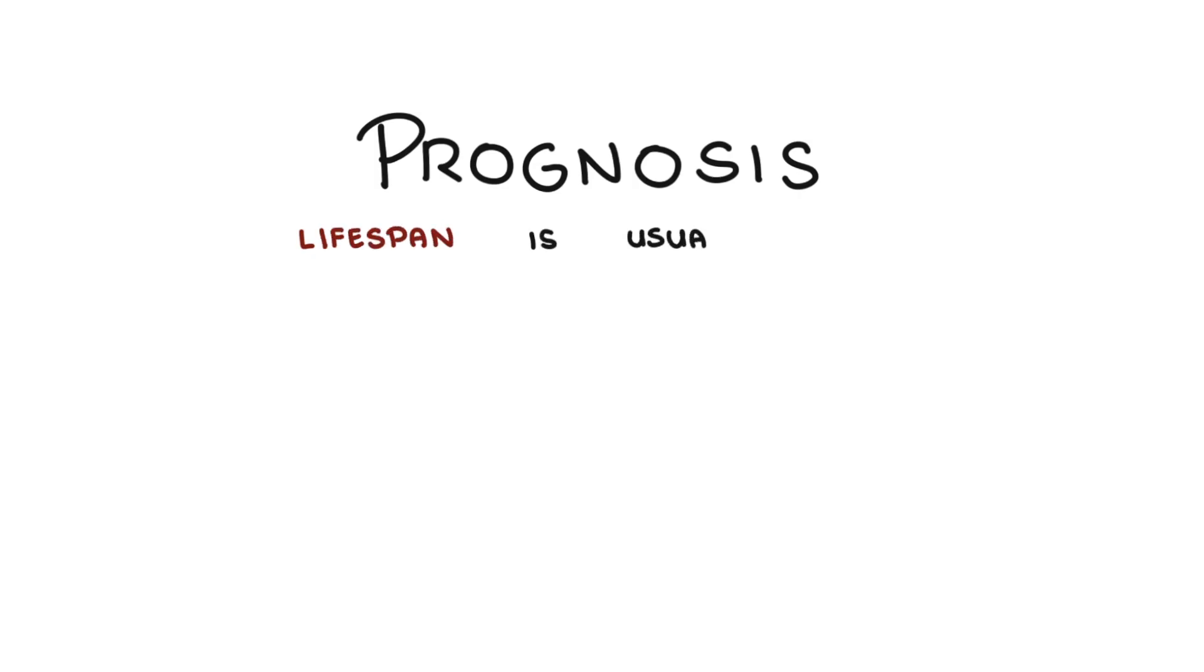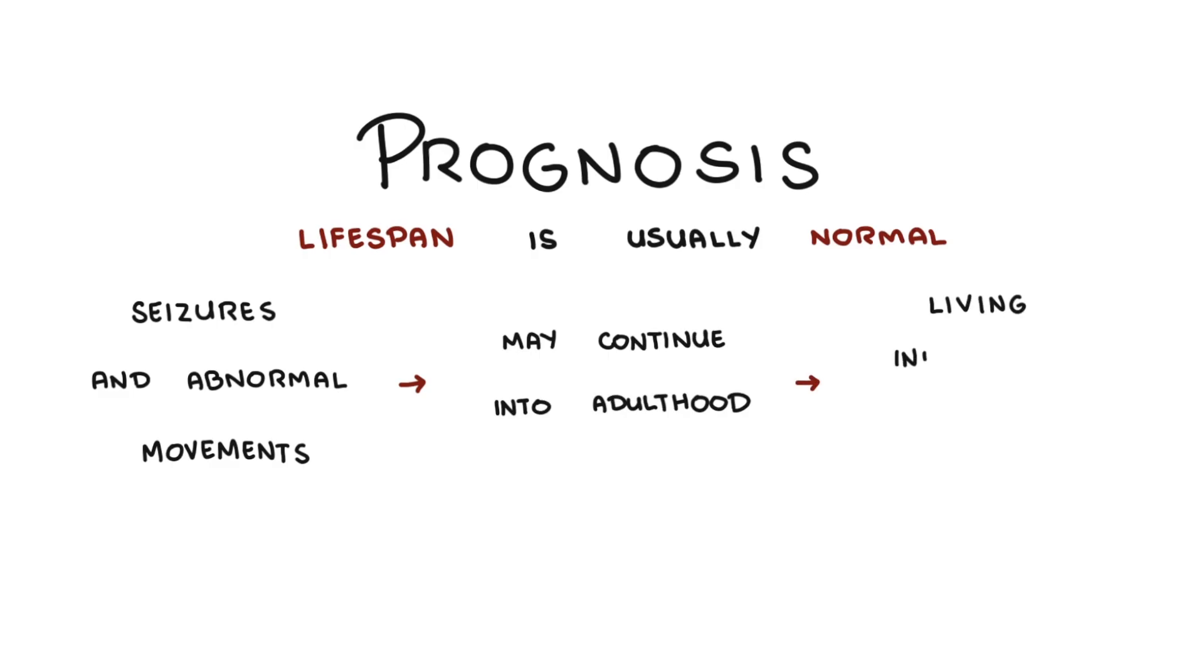Lifespan for people with Angelman syndrome is usually normal compared to that of the general population, and young adults generally have good physical health. However, some issues such as seizures and abnormal movements may continue into adulthood, and living independently is not possible for adults who have these symptoms.